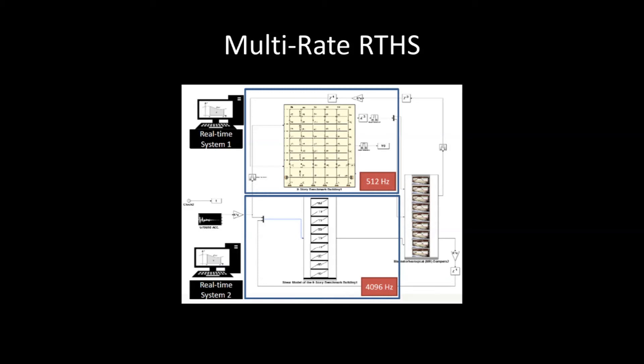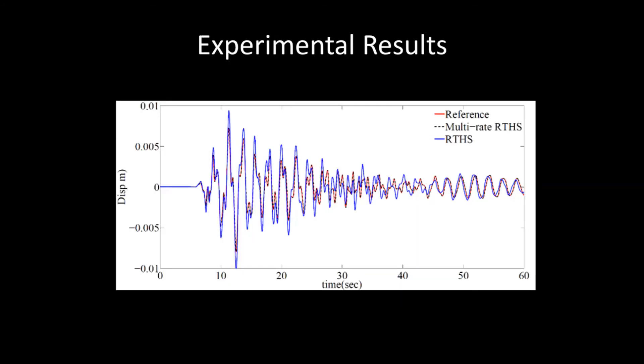We have developed a framework for analyzing the performance of such systems. In this graph, the red line is a reference solution that is computed from a highly accurate model that cannot be run in real-time. Using the multi-rate approach, shown as a dashed black line, we are able to achieve real-time performance that is very close to this reference. The blue line shows the same RTHS without the multi-rate approach, which limited the sensing and actuation rate and resulted in a less accurate test.